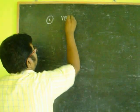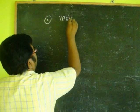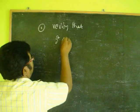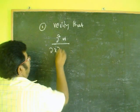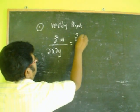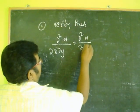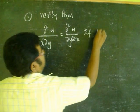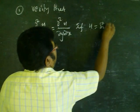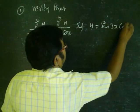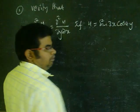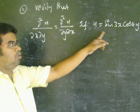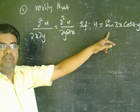Verify that ∂²u/∂x∂y equals ∂²u/∂y∂x, if the function u = sin(3x)·cos(4y). So, verify the function u = sin(3x)·cos(4y).